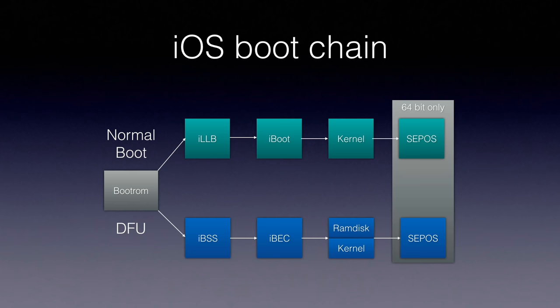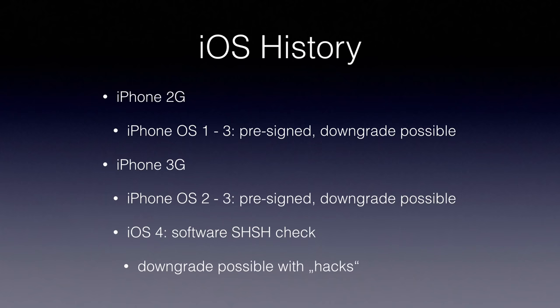Let's talk about iOS history. With the iPhone 2G, we had iPhone OS 1, 2, and 3 — they were pre-signed and downgrading was just possible, nothing stopping you. This changed with iOS 4 on the iPhone 3G, where Apple added software SHSH checks, though downgrading was still possible with a few hacks. I'm only talking about iPhones, but this also applies to iPads and iPods with the same hardware.